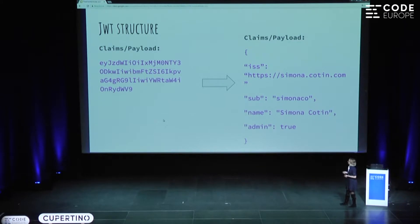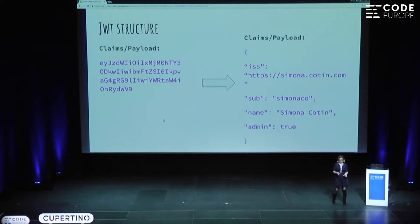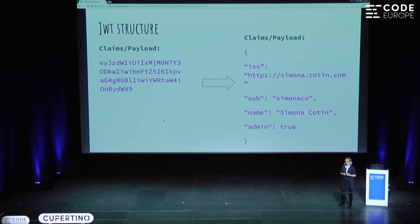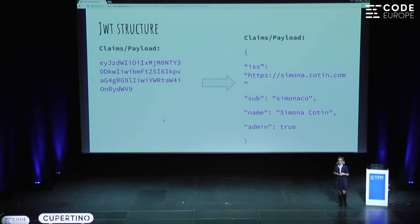The second part of the token is the claims, or the payload. This is the most interesting part of the token because this is where you actually store your user data. There are no mandatory fields, but there are a few included in the specification. For example, ISS stands for issuer — it's a URI that uniquely identifies the party that issued the token, in our case simonacottin.com. There's also SUB, which comes from subject, and refers to the party that the token contains data about — in our case, simonaco.